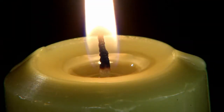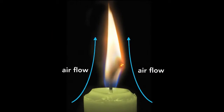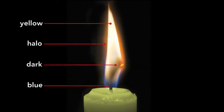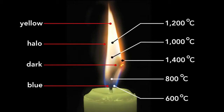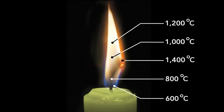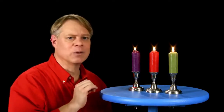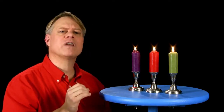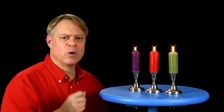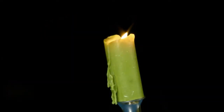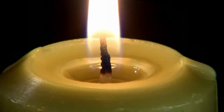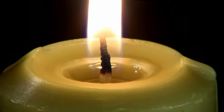You see that a beautiful cup is formed. As the air comes to the candle it moves upwards by the force of the current which the heat of the candle produces, and it so cools all the sides of the wax as to keep the edge much cooler than the part within. The part within melts by the flame that runs down the wick as far as it can go before it is extinguished, but the part on the outside does not melt. The same force of gravity which holds worlds together holds this fluid in a horizontal position, and if the cup be not horizontal the fluid will run away in guttering. The cup is formed by this beautifully regularly ascending current of air playing upon all sides, which keeps the exterior of the candle cool.